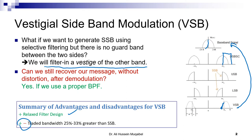Instead of going to double sideband or lower sideband, which requires highly accurate or sharp filters, we use vestigial sideband and trade off the bandwidth. So in this slide we have defined what vestigial sideband is and why we call it a vestige — we call the extra part the vestige.